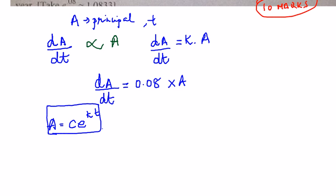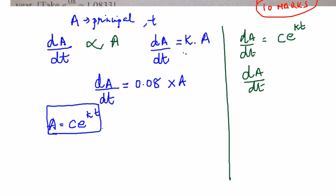dA/dt is equal to kA, so we're going to see how we got this. So we know that dA/dt, see this step is equal to k into A.